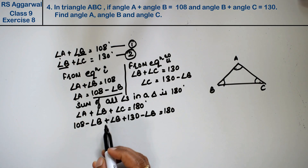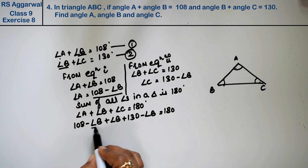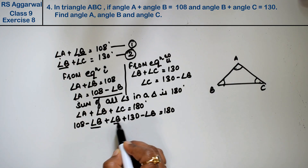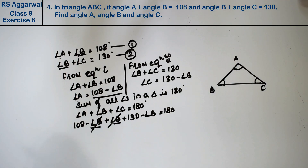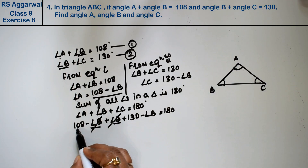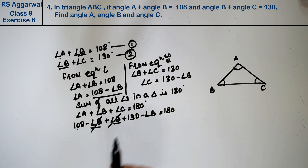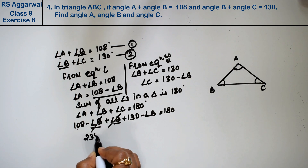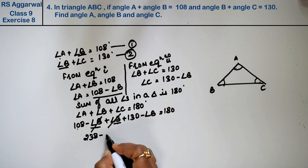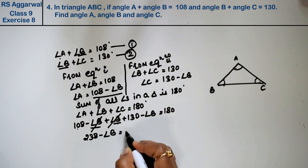The plus angle B and minus angle B cancel each other out. Adding 108 and 130 gives 238, so we get 238 minus angle B equals 180 degrees.